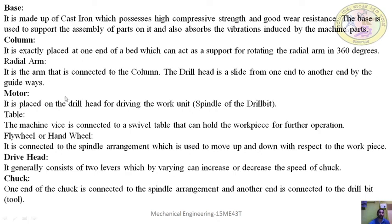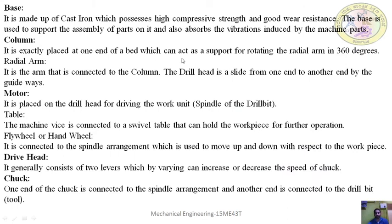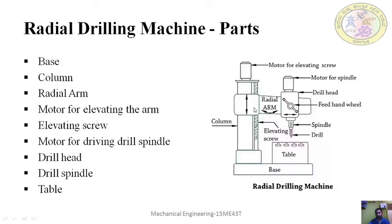The column is placed at one end of the base and acts as a support for the rotating radial arm. It is fixed at the end of the base, and the vertical column is erected there. The column supports the radial arm and allows it to rotate 360 degrees in the radial direction. With the help of this column, the radial arm is rotated.